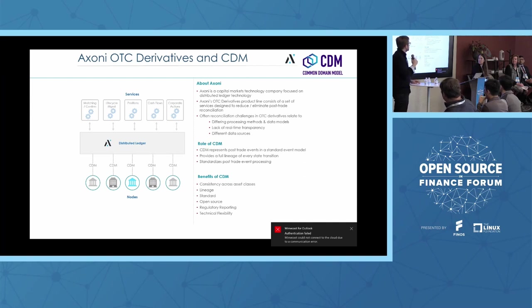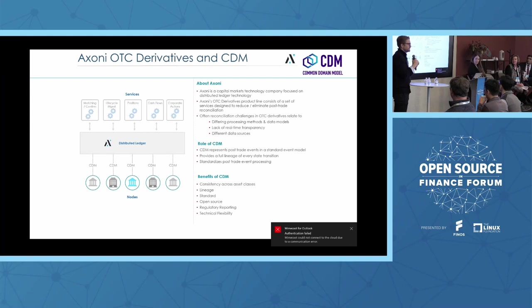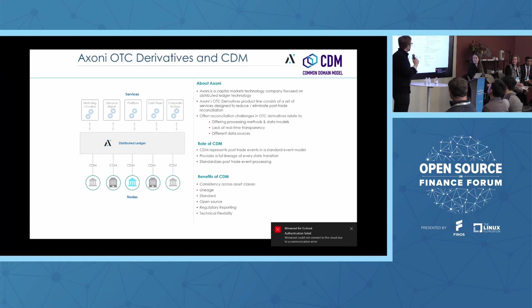There are other reasons why you have different breaks in OTC derivatives, such as lack of real-time transparency and different data sources. The way we're using CDM is essentially as a way to represent post-trade events within a standard event model. By event, we're really talking about representing economic state transitions of trades from one to the next. CDM also provides a full lineage of each one of the state transitions, so there's no ambiguity in how a trade went from one state to the next, which is incredibly useful when multiple parties are trying to understand how a trade went throughout its lifecycle in a consistent manner.